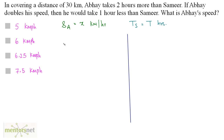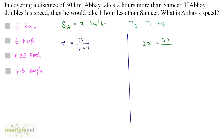Using speed = distance/time: when speed is x, distance is 30, time is t + 2. In the second situation, Abhay doubles his speed to 2x and takes one hour less than Samir, so time is t minus 1. So: x = 30/(t + 2) and 2x = 30/(t − 1).